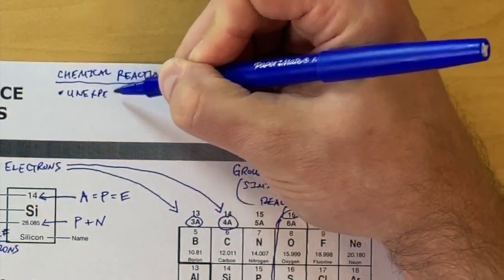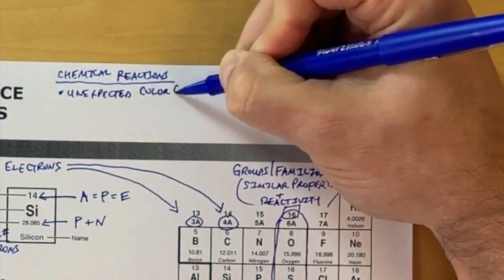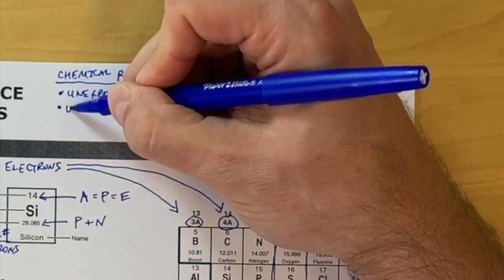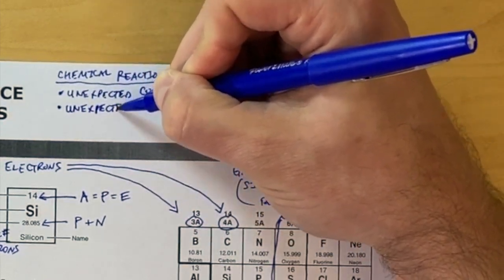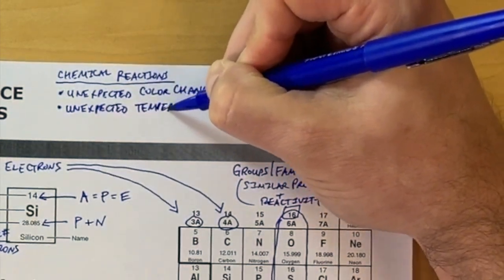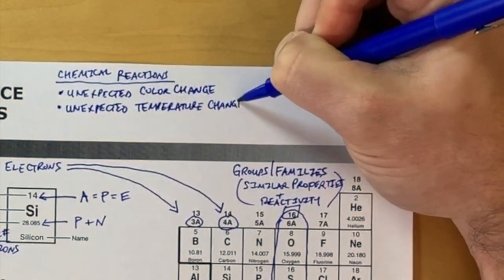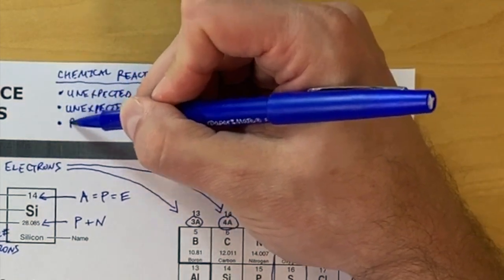One of them is an unexpected color change. If you have a color change happen when you mix two solutions that you weren't expecting, it's likely a chemical reaction occurred. An unexpected temperature change is another piece of evidence. Mix two solutions, the temperature changes, and that is likely a chemical reaction occurring.